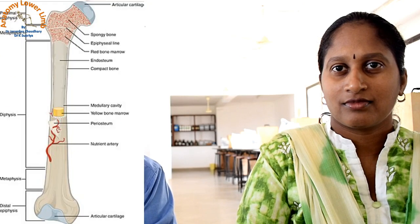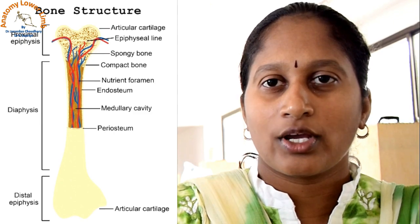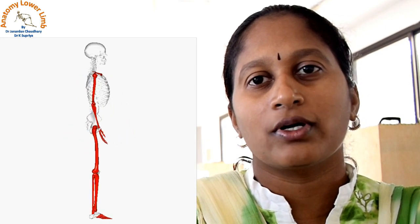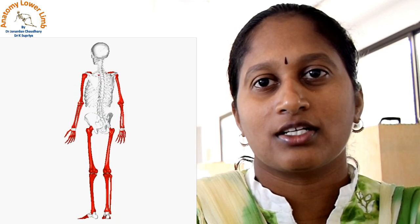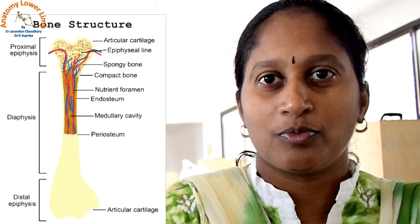What are the peculiarities of the nutrient foramen in a long bone? For example, in the humerus, a nutrient foramen is located in the shaft, and also at the upper end and lower end. Not only the humerus — in all long bones, a very small foramen in the shaft is called the nutrient foramen, while foramina at the upper and lower ends are called vascular foramina. Both supply nutrition to the bone.